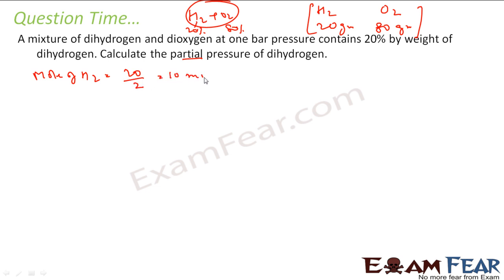Moles of hydrogen in this case will be 20 by molar mass that is 2, that is 10 moles. Moles of oxygen will be 80 by the molar mass of oxygen that is 32, that is 2.5 moles. So I have 10 moles of hydrogen and 2.5 moles of oxygen. Total pressure is 1 bar.